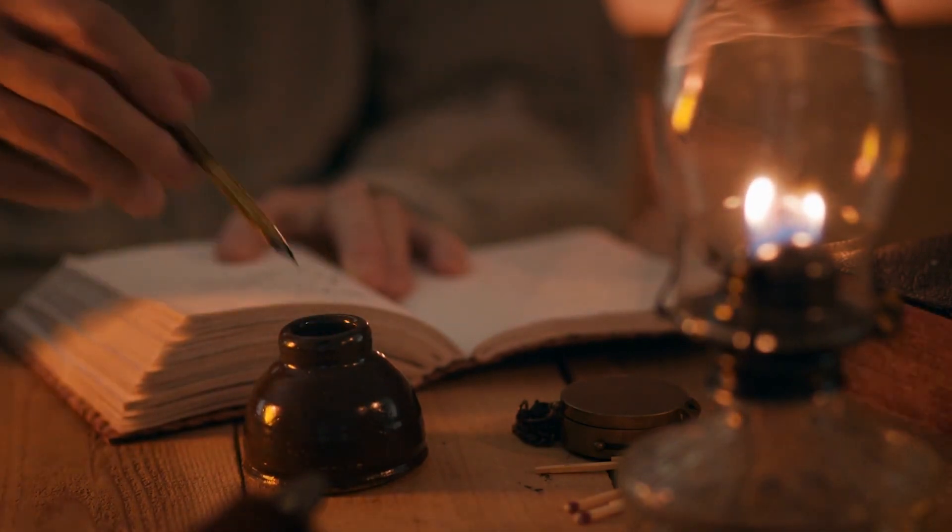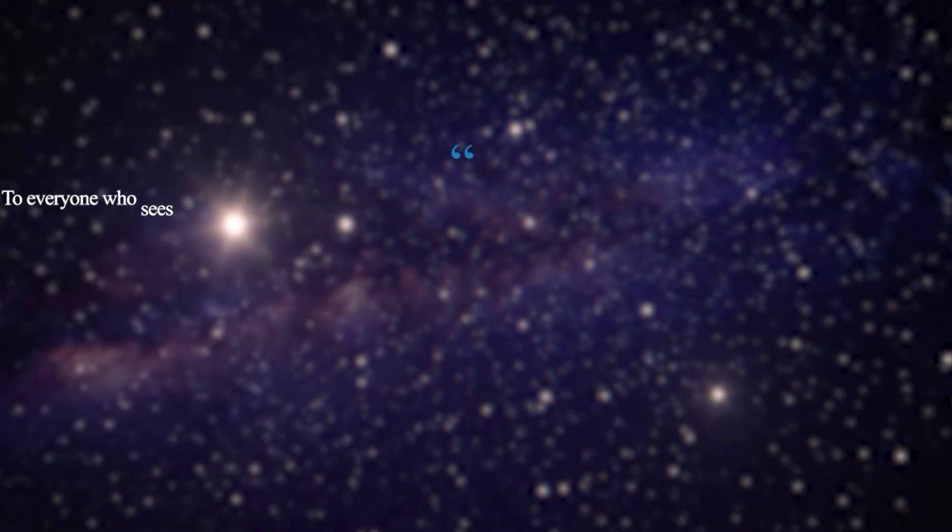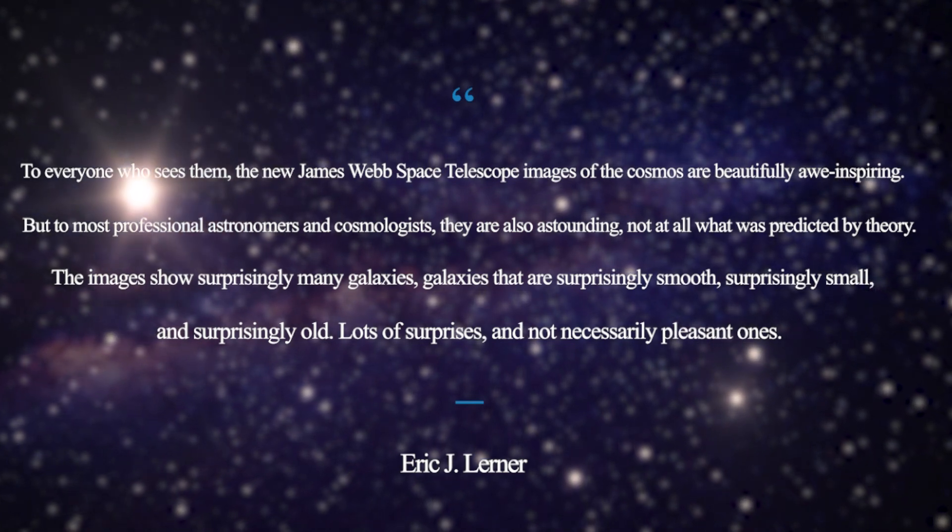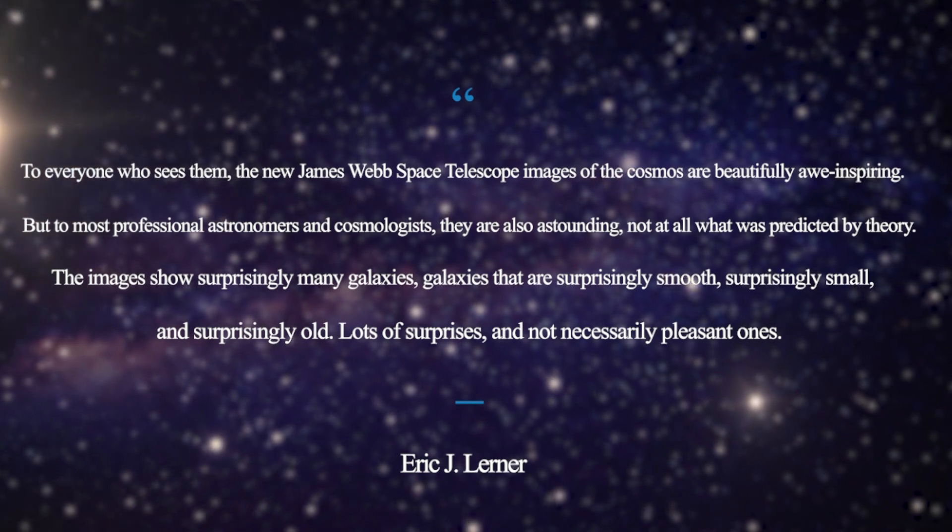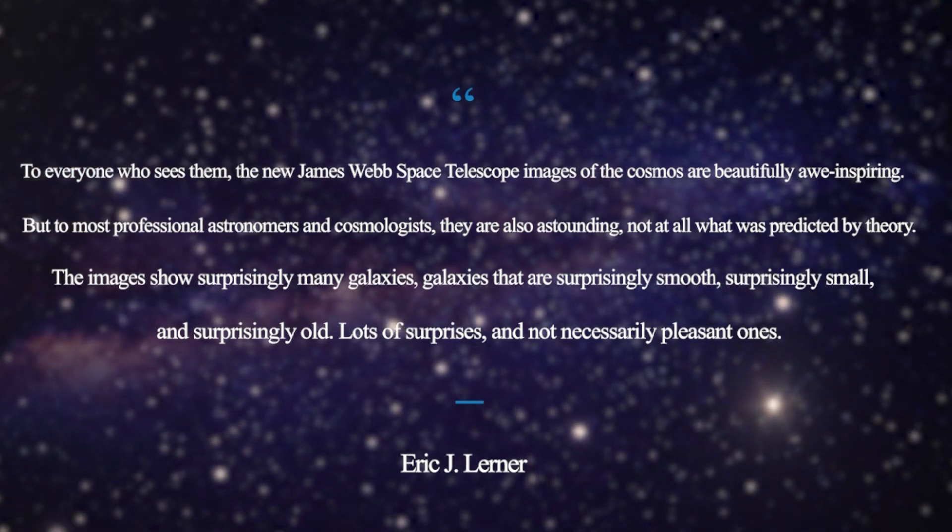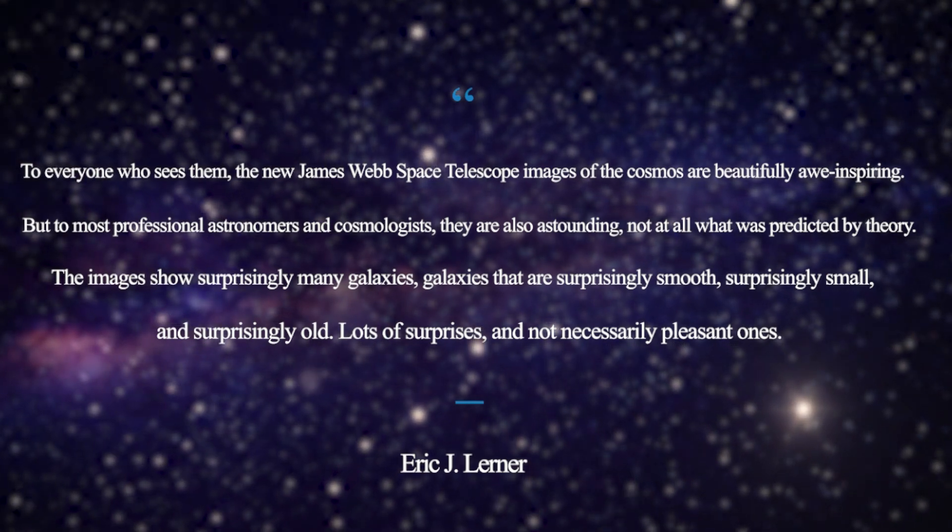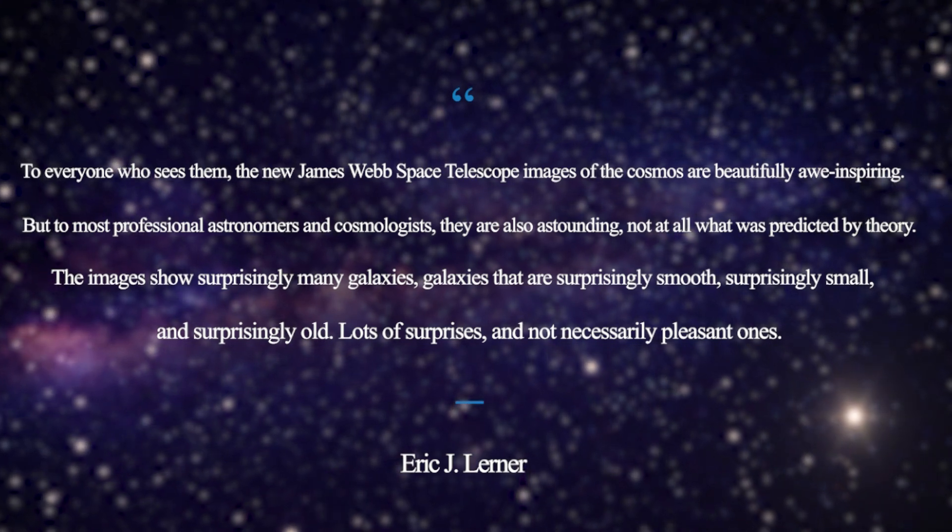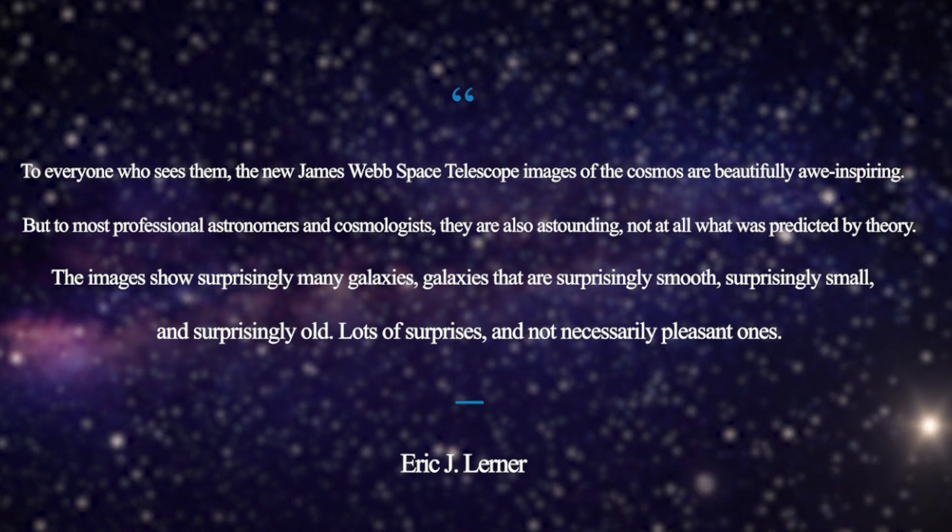Anyway, while this makes him an interested party, it doesn't make him entirely wrong. In a long-winded explanation, Lerner writes: To everyone who sees them, the new James Webb Space Telescope images of the cosmos are beautifully awe-inspiring. But to most professional astronomers and cosmologists, they are also astounding, not at all what was predicted by theory. The images show surprisingly many galaxies, galaxies that are surprisingly smooth, surprisingly small, and surprisingly old. Lots of surprises, and not necessarily pleasant ones.